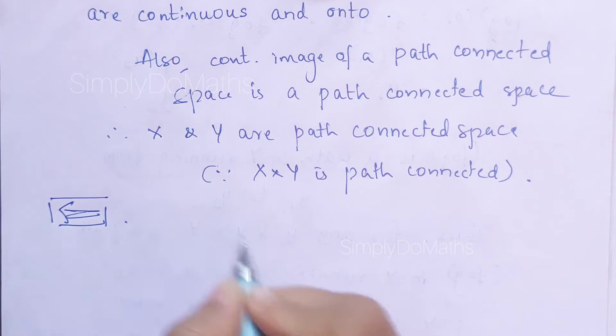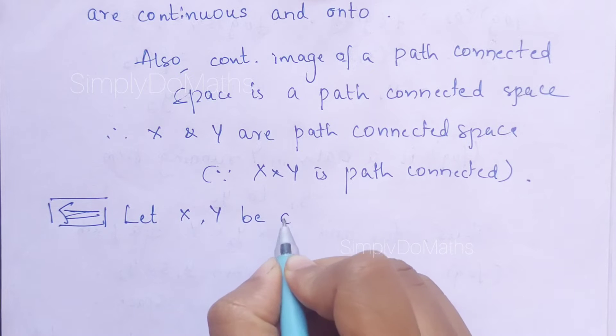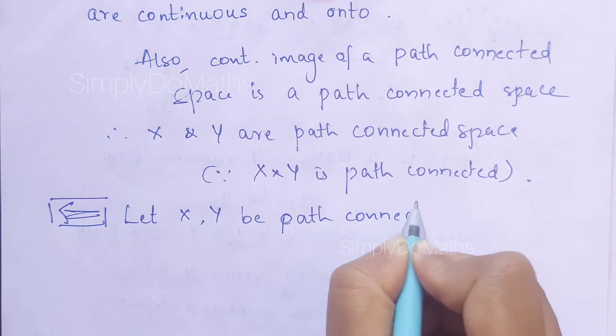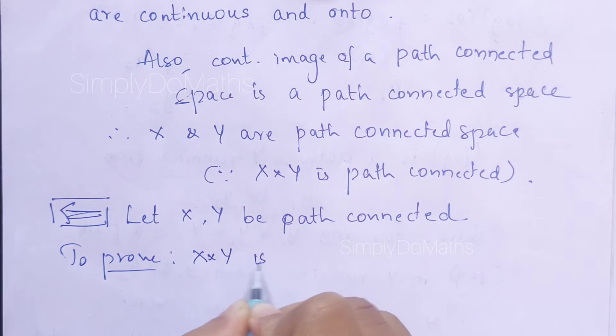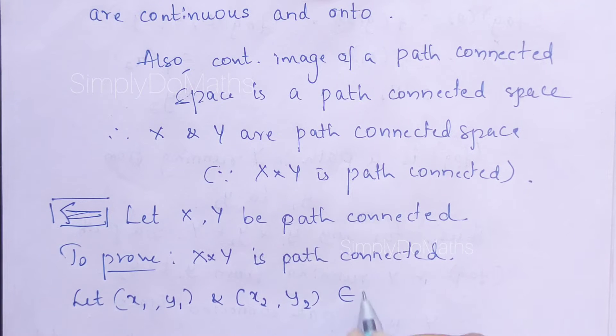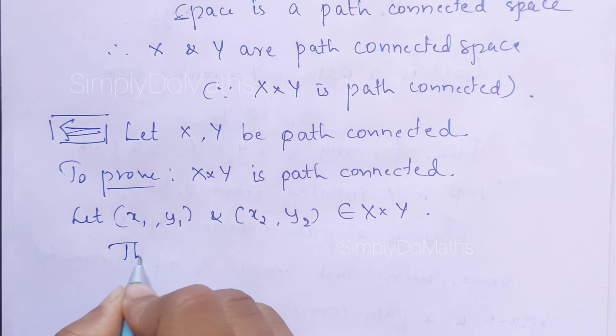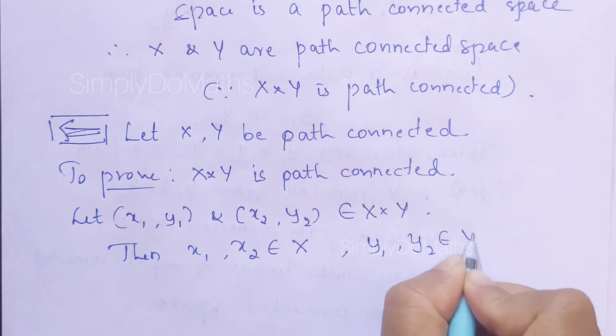Let us prove the converse part. For this, we need to consider X and Y are path-connected spaces. To prove: X×Y is path-connected. Let (x₁, y₁) and (x₂, y₂) be any two points of X×Y. Then x₁ and x₂ belong to capital X, and y₁ and y₂ belong to capital Y.